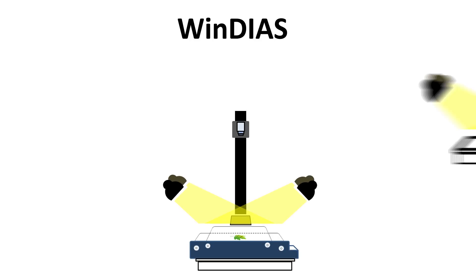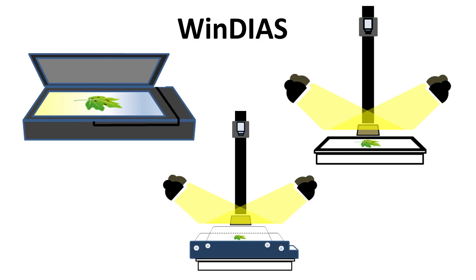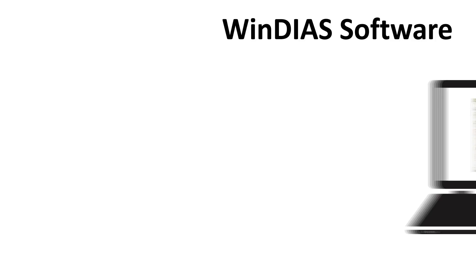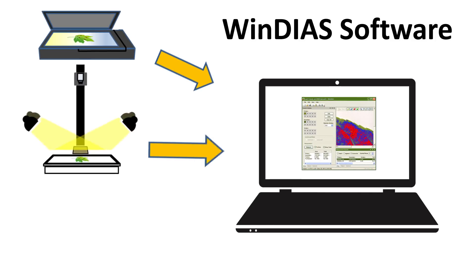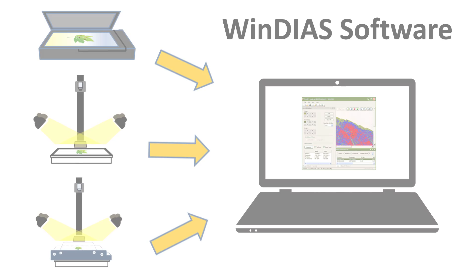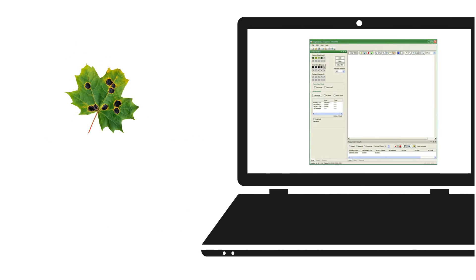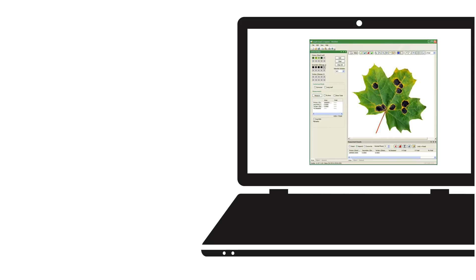WindiAS is a family of three leaf image analysis systems. Each WindiAS system uses the same powerful leaf analysis software, but they use different hardware to obtain leaf images. Those images are imported automatically into WindiAS software, ready for analysis.